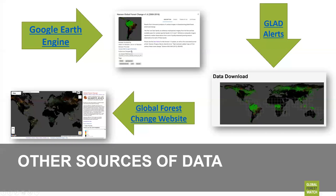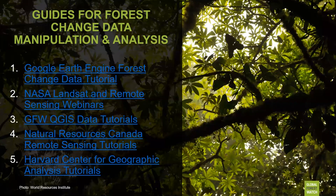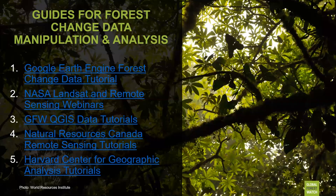These are areas where you can download the raw data. If you want to do your own analyses using the Hansen data, you can download them via these links. We'll pass out this presentation so you can access these links — you can access the forest change data via Google Earth Engine, via the global forest change website, the University of Maryland, and Google Earth Engine. You can also download GLAD alerts via the link and download them specifically by latitude and longitude. We've compiled several different tutorials you can take — through Google Earth Engine, NASA, QGIS, the Canadian Natural Resources Remote Sensing Tutorials, and the Harvard Center for Geographic Analysis Tutorials. These tutorials are all free and will walk you through how to do remote sensing analysis and work with specific geospatial data.